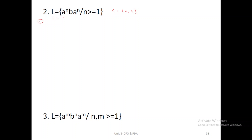First, you should write the correct input strings for a given language. If I am substituting n=1, the strings are ABA. If n=2, AABAA. If n=3, AABAAA. If n=4, AAAABAAAA.